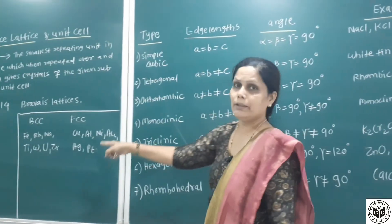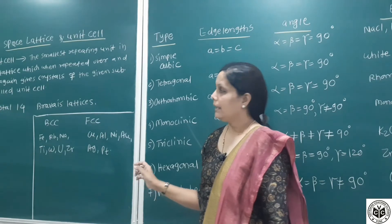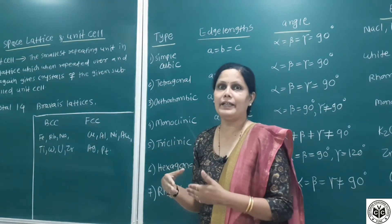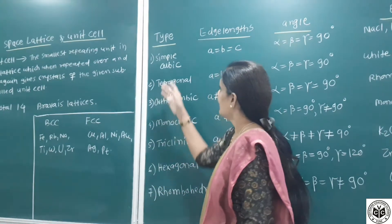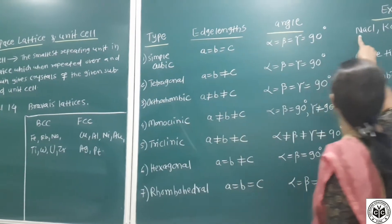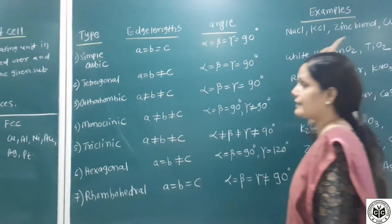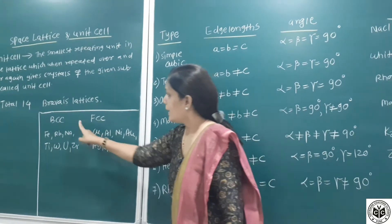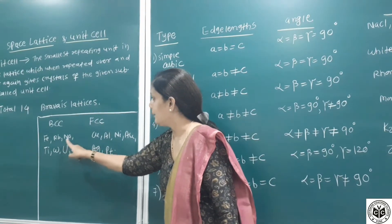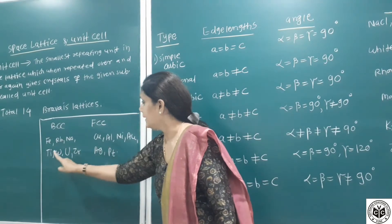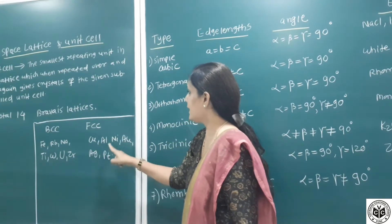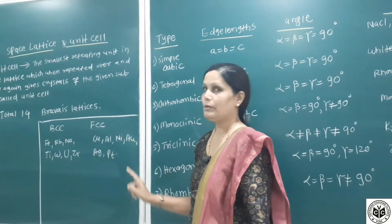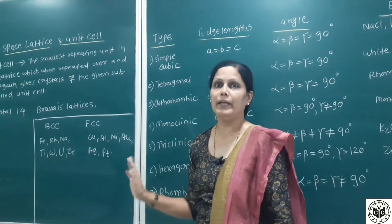The cubic unit cell is classified into three types. Simple cubic we have studied examples. BCC is body centered and FCC is face centered. Examples of BCC are iron, sodium, titanium, tungsten, uranium, and zirconium. FCC examples are copper, aluminum, nickel, gold, silver, and platinum.